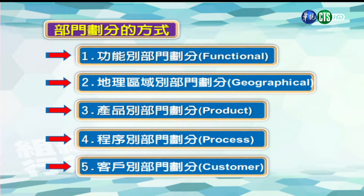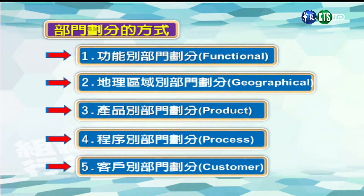第一种是功能别的部门划分，第二种是地理区域的部门划分，第三种是产品别的部门划分，第四种是程序别的部门划分，第五种是客服别的部门划分。这五种划分可以参考所呈现出来的几张组织图。